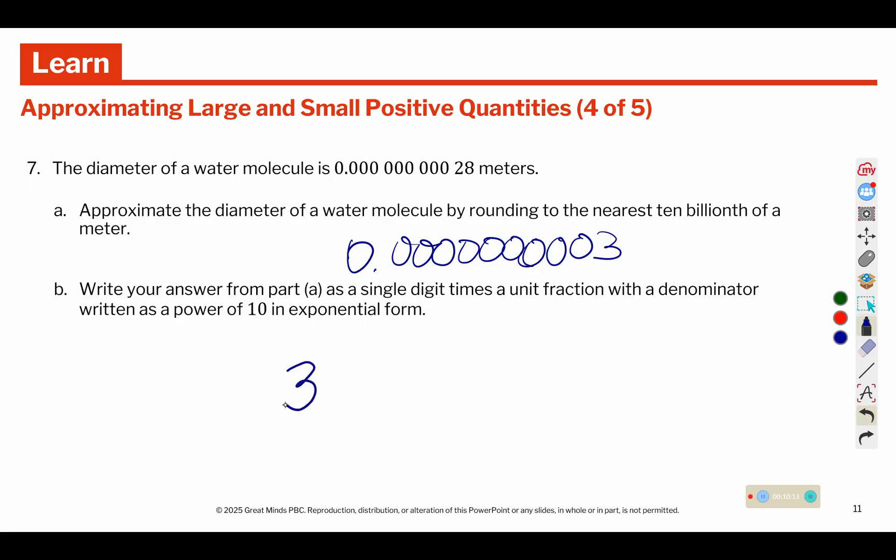And then we're going to write it as a single digit, which is the 3, times the power of 10. Since it's a very small number, we are going to use the fraction for our powers of 10. There is 1, 2, 3, 4, 5, 6, 7, 8, 9, 10 place values there. 10 billionths, you can think of how many is in the billionths, the 10 billionths.